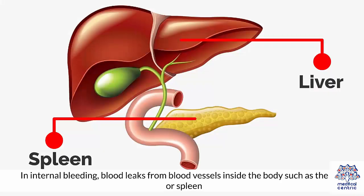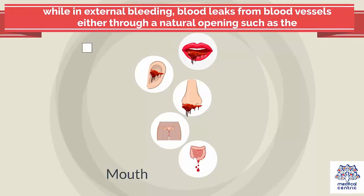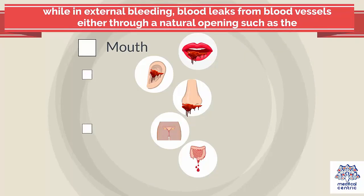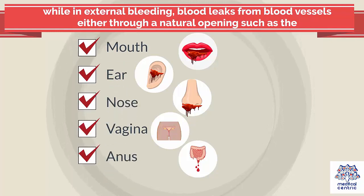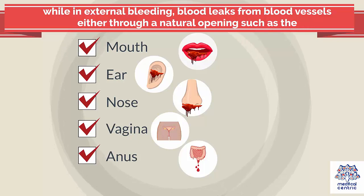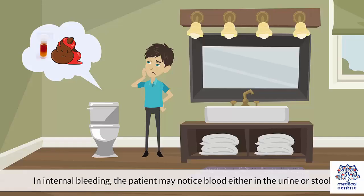In internal bleeding, blood leaks from blood vessels inside the body, such as the liver or spleen. While in external bleeding, blood leaks from blood vessels either through a natural opening — such as the mouth, ear, nose, vagina, or anus — or through a break in the skin. In internal bleeding, the patient may notice blood either in the urine or stools.